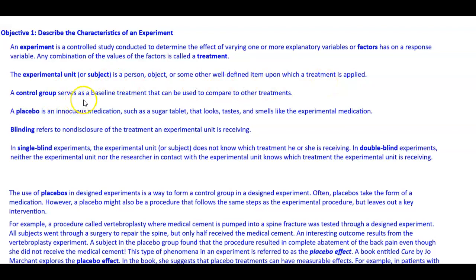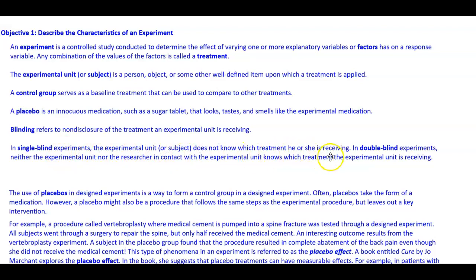A control group serves as a baseline treatment that can be used to compare to other treatments. A placebo is an innocuous medication, such as a sugar tablet that looks, tastes, and smells like the experimental medication. Blinding refers to non-disclosure of the treatment an experimental unit is receiving. In single-blind experiments, the experimental unit does not know which treatment he or she is receiving. In double-blind experiments, neither the experimental unit nor the researcher in contact with the experimental unit knows which treatment is being received.